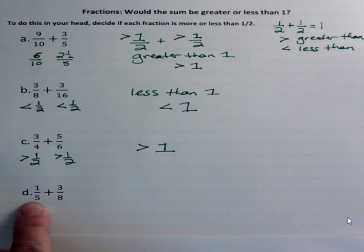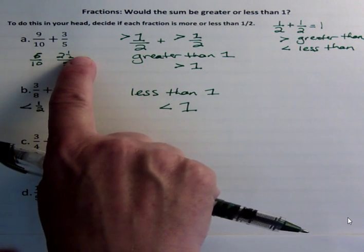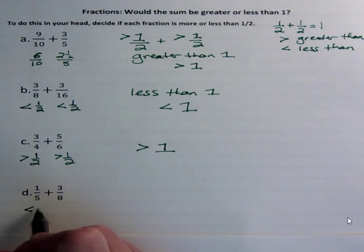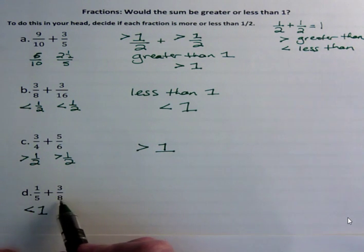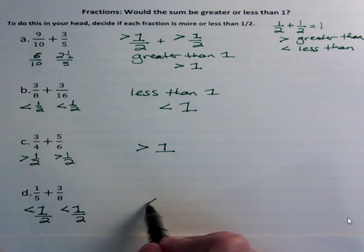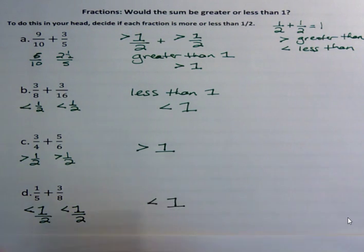One-fifth is less than a half, because half of five, as we said earlier, was two and a half, and we have less than that, so we have less than one. And then three-eighths, well, we said half of eight would be four, and we don't have that much. We have less than that, so we have less than one. So both parts are less than one-half. If both parts are less than one-half, then I know for sure my answer is going to be less than one.